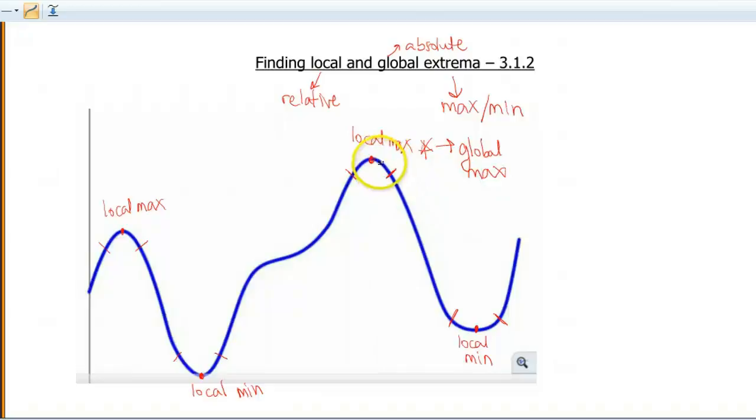How about minimums? Is there a lowest point on this graph? Is there a point that the graph does not go below? And yes, again, as it turns out, it is at this local minimum. So this local minimum is also a global minimum.